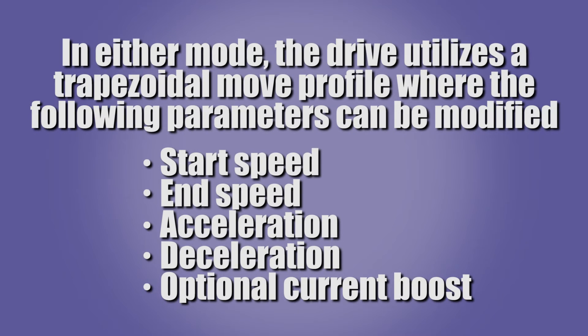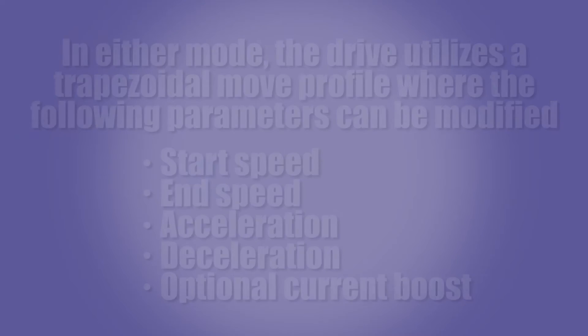In either mode the drive utilizes a trapezoidal move profile where the following parameters can be modified: start speed, end speed, acceleration, deceleration, and an optional 30% current boost during ramping to help the motor overcome inertia when initially setting the load in motion. The communication structure is set up in a fashion where each move command contains the entire move profile. So in addition to the move parameters, current levels — both run current and hold current — as well as step modes all the way up to 1/64th of a step can also be modified.